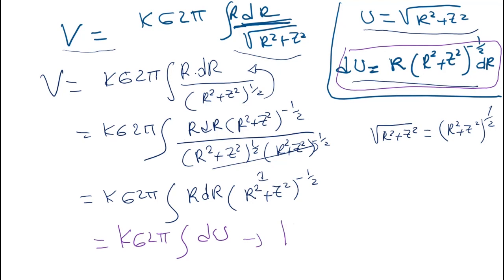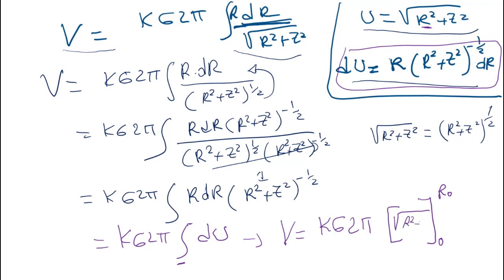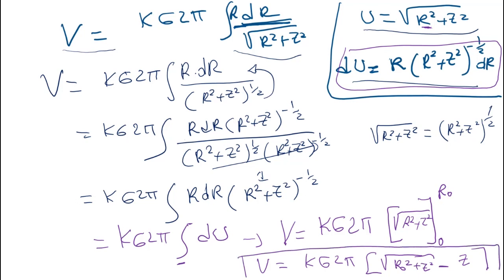The integral of du is just u, but we need the correct limits. Since u depends on r, and r (the radius of the pink area) goes from 0 to R0, we evaluate: V = k·sigma·2π · [√(r² + Z²)] from 0 to R0. This gives V = k·sigma·2π · (√(R0² + Z²) − √(0² + Z²)), and √(Z²) = Z. So the electric potential due to the charged disk is V = k·sigma·2π·(√(R0² + Z²) − Z).